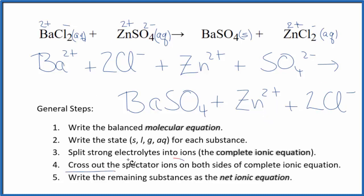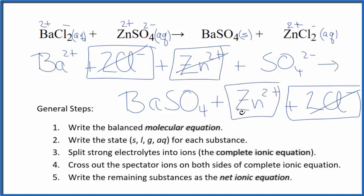Now we can cross out the spectator ions. They're on both sides. Let's see. We have reactants, these two chloride ions here, and we have them in the products. Zn2+, we got that right here, and we have it again. Get rid of that.